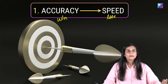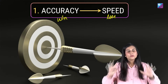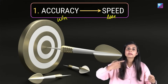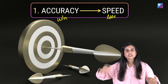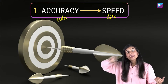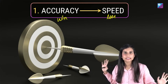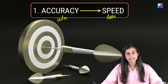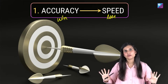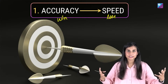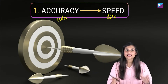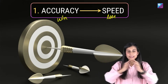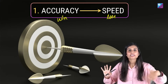Iske do aur fayde hote hain. Jab aap paanch sawaal chunne ke liye baaki sawaal bhi dekh rahe ho, toh samajh aata hai kaunse concept se questions poochhe ja rahe hain, kaun sa pattern repeat ho raha hai — toh agle mock mein aur achhi taiyari karke jaoge, un concepts ko polish karke. It will prepare you better for the next mock. Dusra, jab itne saare sawaal mein se sirf teen-paanch chunne hain, toh aapka question selection improve hota hai — question selection and question rejection is a skill set to develop for this competitive exam. You work upon that unconsciously when practising accuracy over speed.